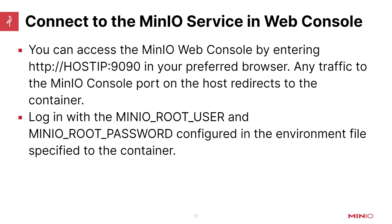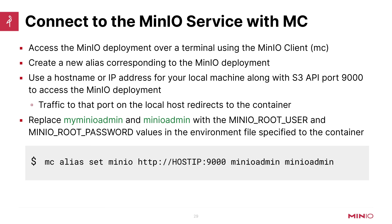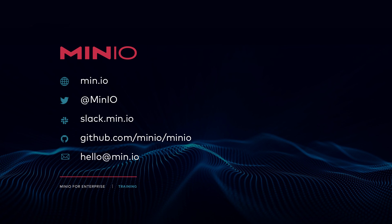You can access the MinIO web console by entering http://[your-host-IP]:9090 in your preferred browser — or use a DNS name if you've mapped one. Any traffic pointed at that will be redirected into the container. Log in with the MINIO_ROOT_USER and MINIO_ROOT_PASSWORD defined in your environment variable file. You can also access the MinIO deployment over a terminal shell using the MC client: run mc alias set, call the alias something descriptive, point it at the host IP on port 9000 (the API port), and provide the username and password. That's it for the slides portion — in the next video we'll show all of this in a lab environment.